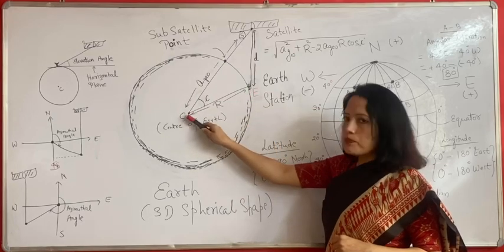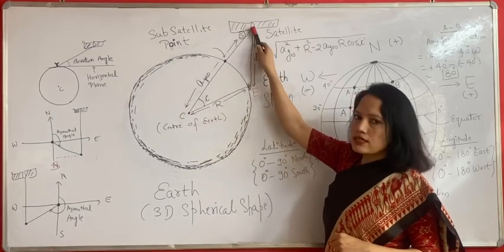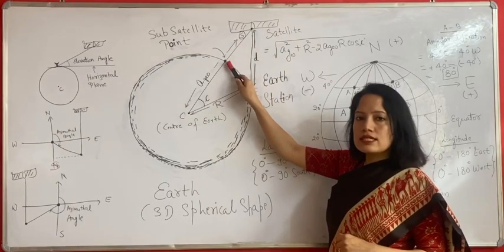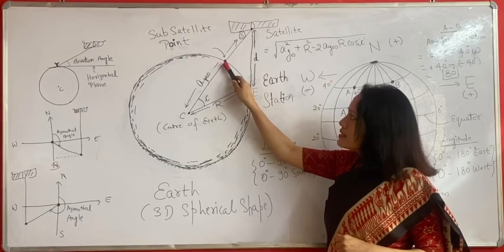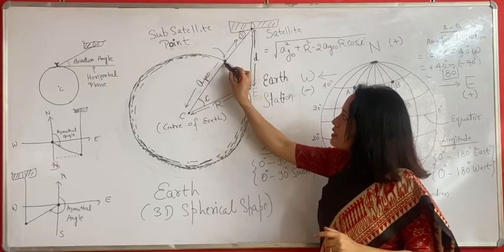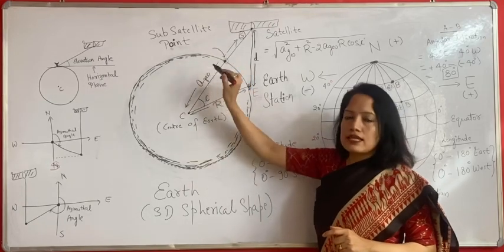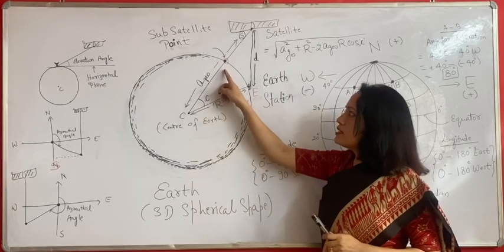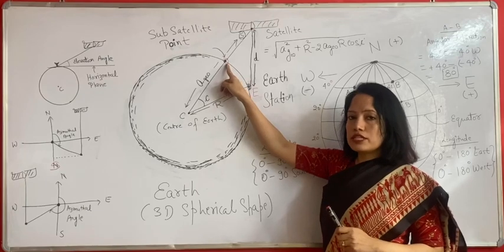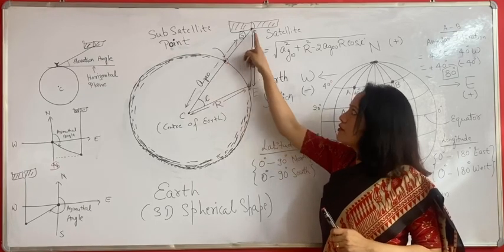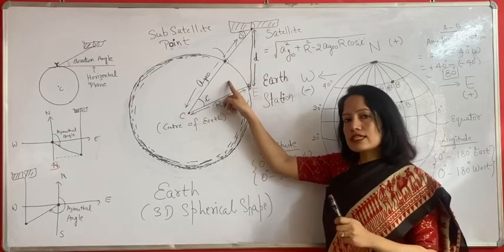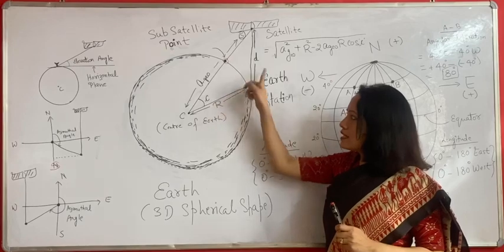Now if we join points C and S, this line will intercept the Earth's surface at a point. This point is called the sub-satellite point. This is very important because it helps us in determining the longitudes and latitudes of the satellite. You must be wondering what latitude and longitude are — we will discuss that after completing this discussion.